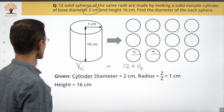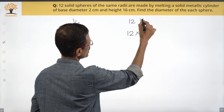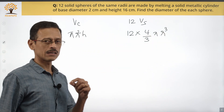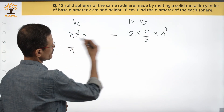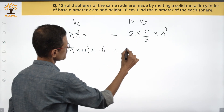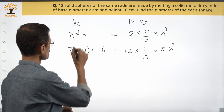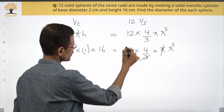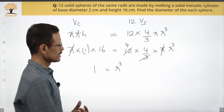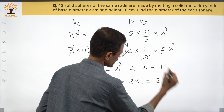Volume of cylinder = πr²h. Setting it equal to 12 × (4/3)πr³: π cancels on both sides, 3 cancels with 12 leaving 4, so 1² × 16 = 4 × 4 × r³, giving 16 = 16r³. Dividing both sides by 16: r³ = 1, so r = 1 centimeter. The diameter of each sphere equals 2 × 1 = 2 centimeters.